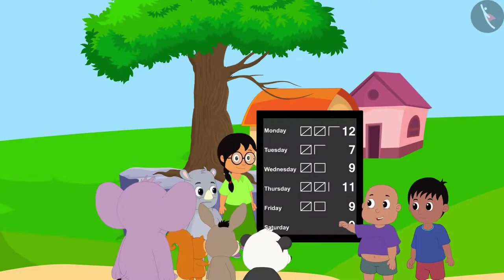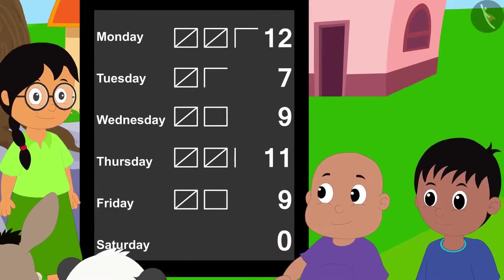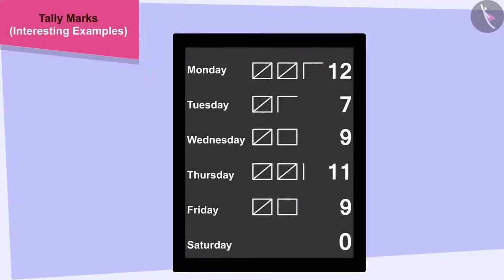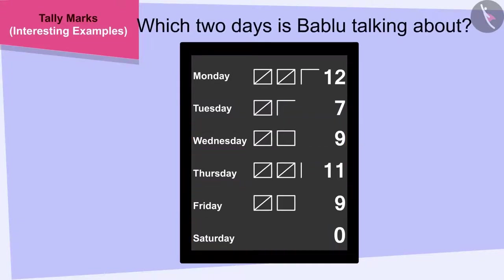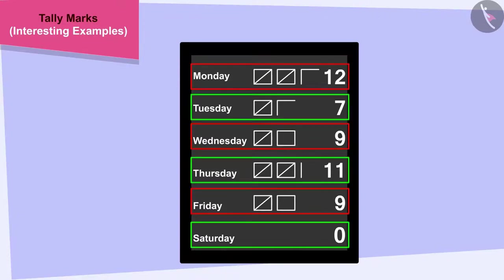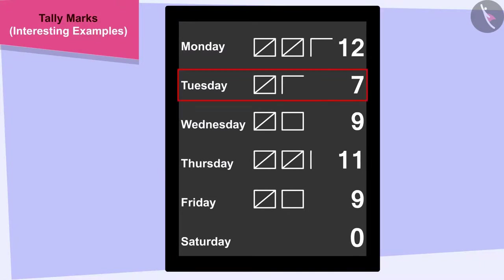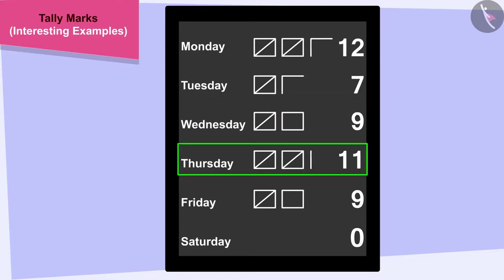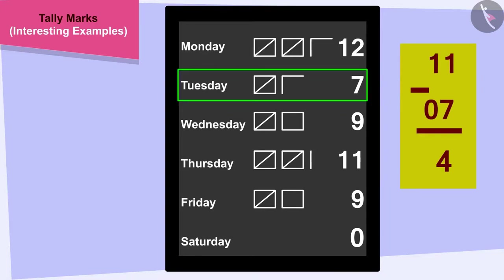Bablu told Raju: "Yes, Raju. And look, on this day, 4 more hours of work were completed than this day." Children, can you tell which two days Bablu is talking about? To find a solution, we have to find two days in which the difference between the hours of work completed is 4. If we look closely, we will find that 7 hours of work were completed on Tuesday and 11 hours on Thursday, which is 4 more than 7. So, Bablu is talking about Tuesday and Thursday.